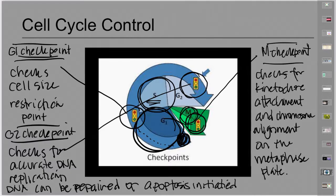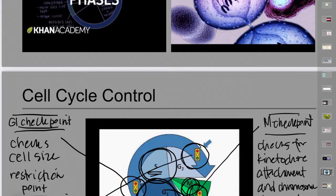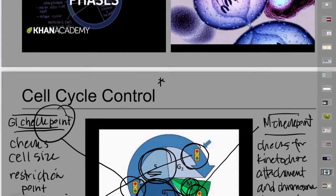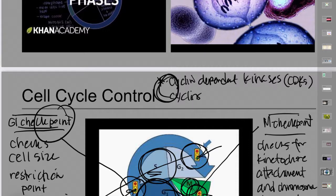We'll talk more about what the checkpoints are comprised of during the lab. The signaling molecules involved in these checkpoints are two important proteins: cyclin-dependent kinases — called CDKs — and cyclins. It's the action of these two proteins together that operates at each one of these biological stoplights.